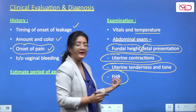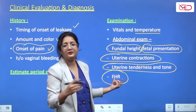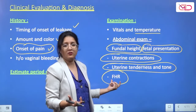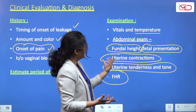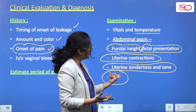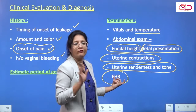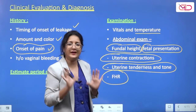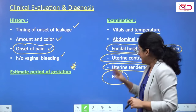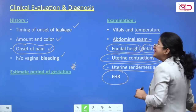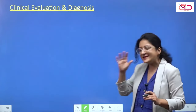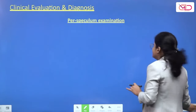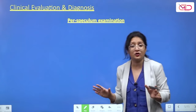Check fetal heart rate to establish that the fetus is alive and to identify any fetal distress. Proceed to an admission CTG to establish baseline fetal wellbeing. The next step is to perform a sterile per speculum examination to confirm the diagnosis.